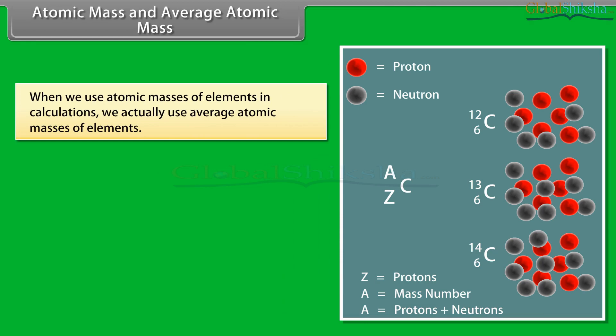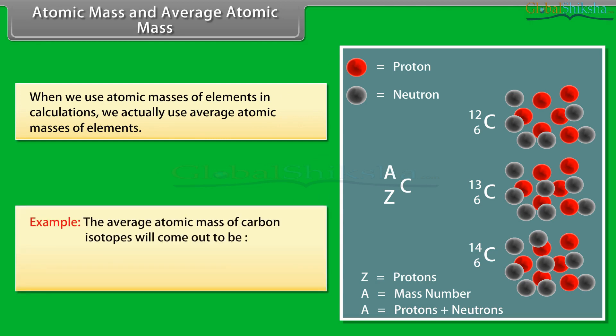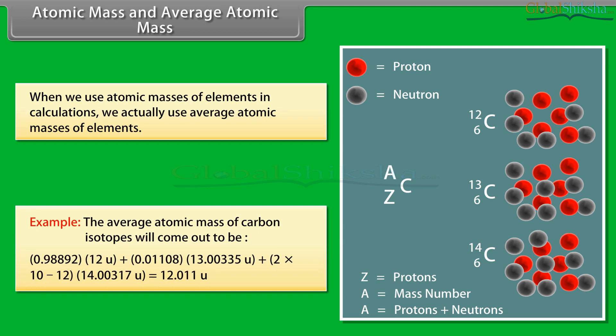When we use atomic masses of elements in calculations, we actually use average atomic masses. For example, the average atomic mass of carbon isotopes is: (0.98892 × 12u) + (0.01108 × 13.00335u) + (2 × 10⁻¹² × 14.00317u), which equals 12.011u.